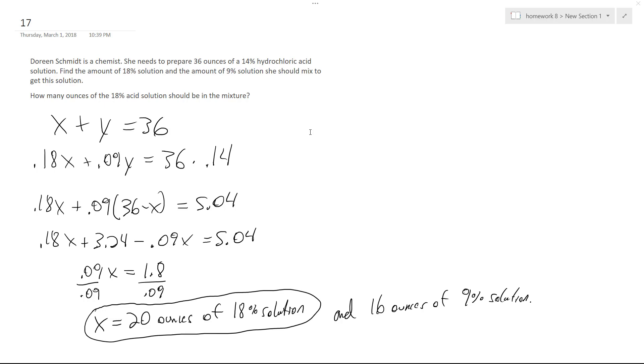So I have two equations, two unknowns. Here's my original equation. Bottle X is going to be the 18% solution, then bottle Y is the 9%. She's going to mix them, but no matter what, she needs to come up with 36 ounces.